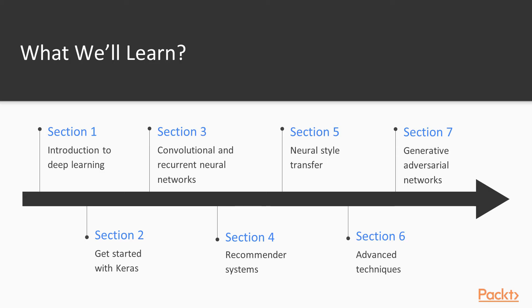So the course overview — what we're going to learn in this course. First, we're going to have an introduction: what is deep learning and some major machine learning concepts. Then we're going to see Keras — how to design, build, and train deep learning models. After that, we're going to go into the core of deep learning with convolutional and recurrent neural networks, the common architectures, and so on.